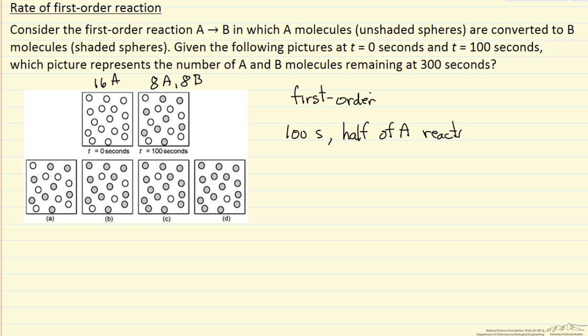A first-order reaction means the reaction rate is proportional to how much is there. So after 100 seconds we only have 8 molecules of A, and so if we run for another 100 seconds, half of those will react. So at 200 seconds we would have 4 molecules of A, so essentially 100 seconds is T1 half, the half-life for this reaction.